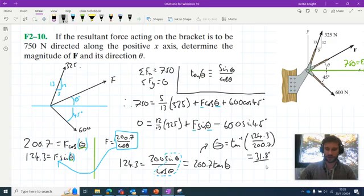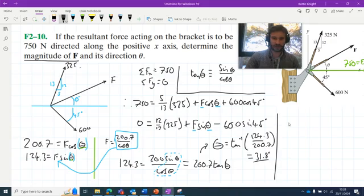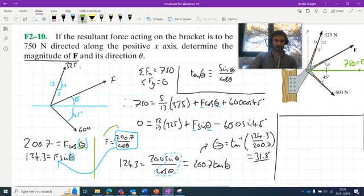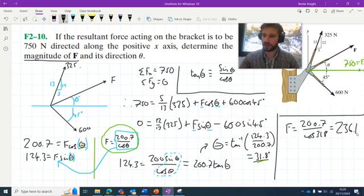Are we done? No. The problem is also asking for the magnitude of F, this force here. Conveniently, as is often the case when using the substitution method for solving simultaneous equations, we have a ready-made equation which gives us F in terms of theta. We've just determined theta is 31.8. So we can say that F is equal to 200.7 over the cos of 31.8, which gives us a value of 236.1 newtons. Amazing. So 31.8 degrees and 236.1 newtons, these are the solutions to our problem here.